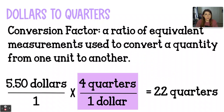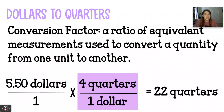What's happening here is that you are using a conversion factor. A conversion factor is just two quantities that are equal to each other, but they have different units representing them. Typically we're going to represent it as a ratio or a fraction. So here our conversion factor is highlighted in pink — four quarters is equal to $1. They represent the same amount of money, just represented by different units: quarters and dollars.